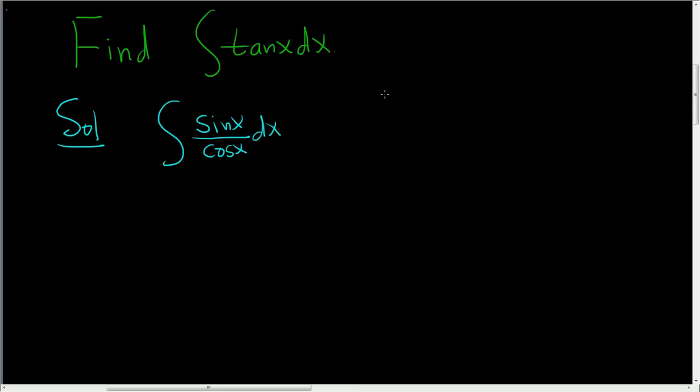And now you can see that if you make a u substitution, if you set u equal to cosine, well, the derivative of cosine is negative sine x dx.